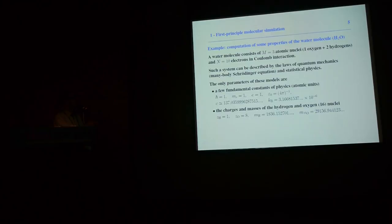The only parameters in this model are a few fundamental constants of physics: the reduced Planck constant, the electron mass, the elementary charge, the electric permittivity of the vacuum, the velocity of light, the Boltzmann constant, as well as the charges and masses of the nuclei. These are very well known experimentally — the charge of hydrogen is 1, the charge of oxygen is 8. The masses of the isotopes can be measured very accurately using mass spectroscopy.